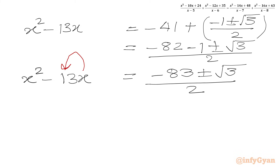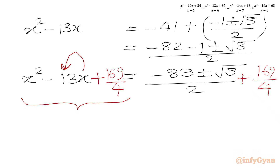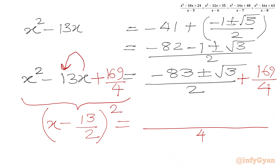The coefficient of x is 13, so half of 13 is 13/2, and (13/2)² = 169/4. Adding 169/4 to both sides: the LHS becomes the perfect square (x - 13/2)². For the RHS, converting to denominator 4: (-83 × 2 ± 2√3 + 169) / 4 = (-166 ± 2√3 + 169) / 4 = (3 ± 2√3) / 4.